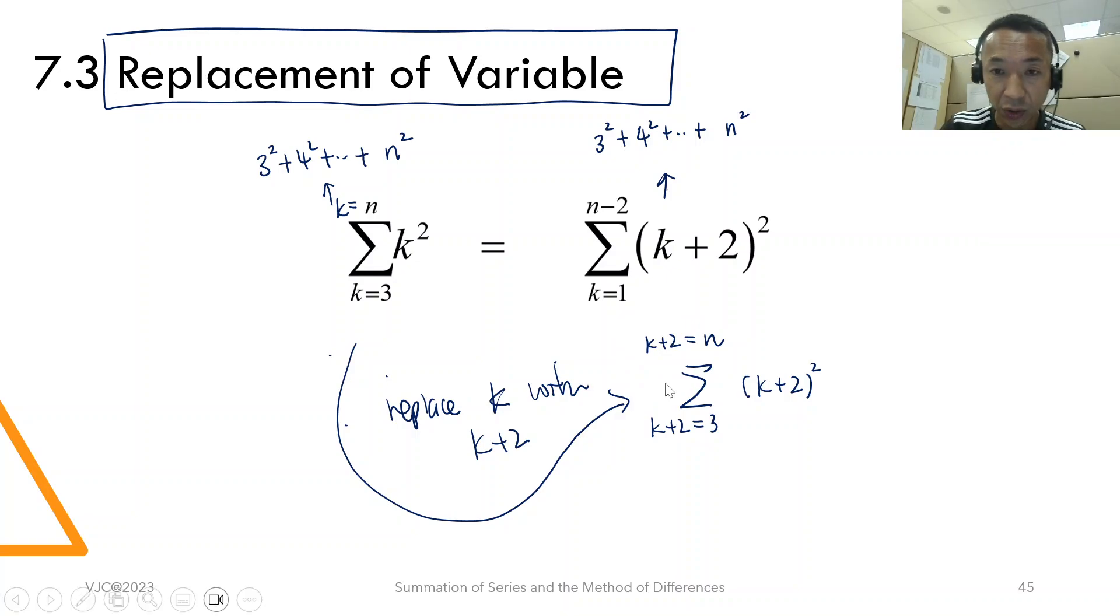This is most important. Only then will you end up here. Only then will you end up here because you move, you minus 2 on both sides, you get n minus 2. So, minus 2 on both sides, your k goes to 1. Then your expression will look like this.